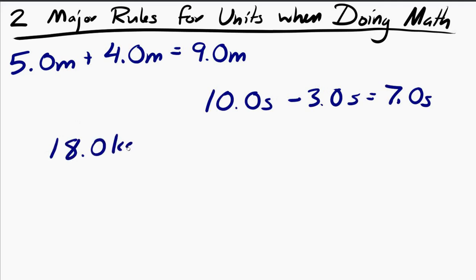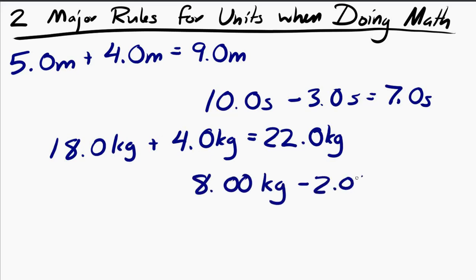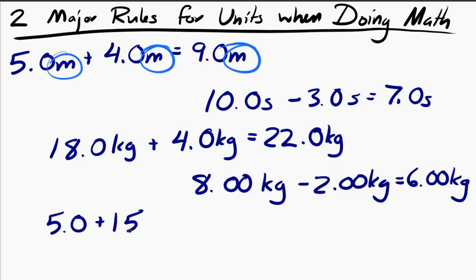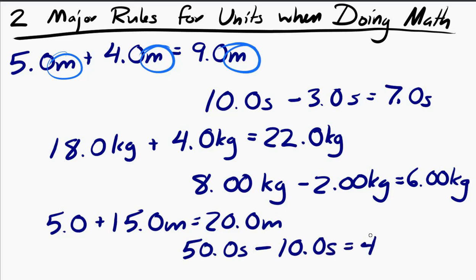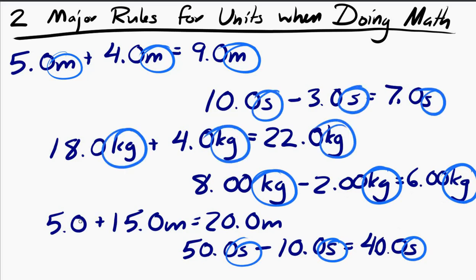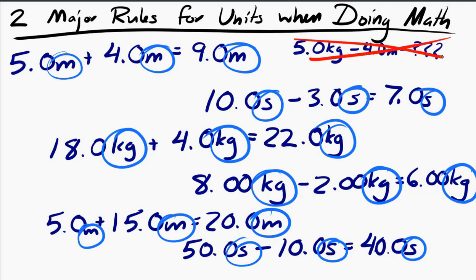So, what you should notice when you add and subtract things with units, the units do not change. If you add 5 meters to 15 meters, you get 20 meters. The units do not change. If you do 50 seconds minus 10 seconds, you get 40 seconds. In addition and subtraction, the units do not change. Also, notice that when you add and subtract things with units, the two things that you're adding or subtracting have to already have the same units. You can't do 5 kilograms minus 4 meters, that doesn't make physical sense. So, we're not allowed to do that.